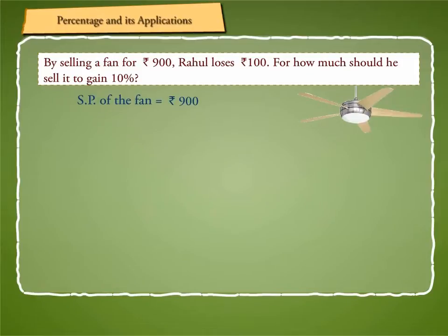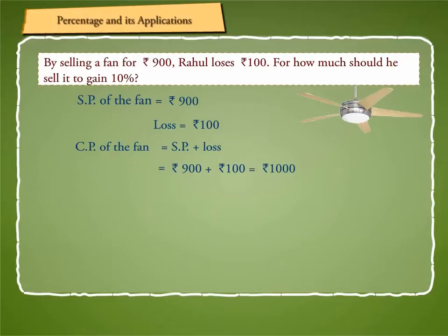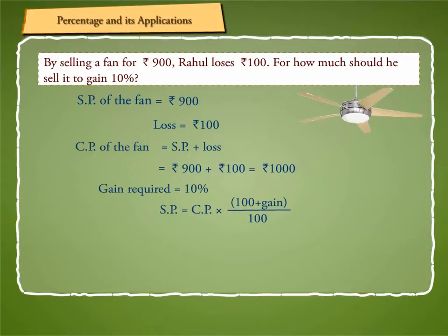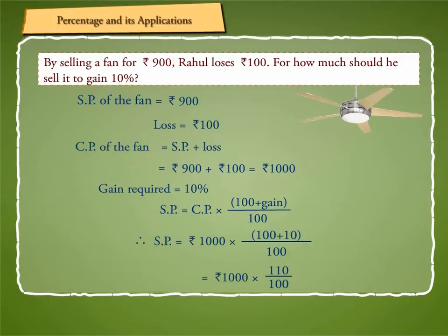We are given SP of the fan as Rs. 900. Loss is equal to Rs. 100. CP of the fan is equal to SP plus loss, which is equal to Rs. 900 plus Rs. 100, which is equal to Rs. 1,000. Gain required is equal to 10%. By using the formula, SP is equal to CP into (100 plus gain) by 100, we get SP is equal to Rs. 1,000 into 110 by 100, which is equal to Rs. 1,100.